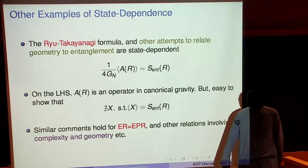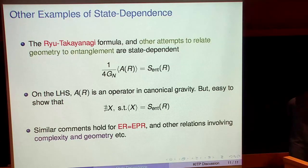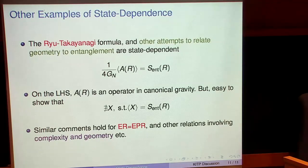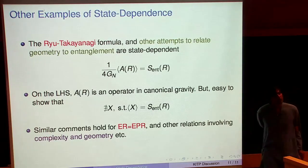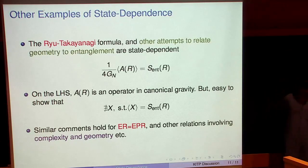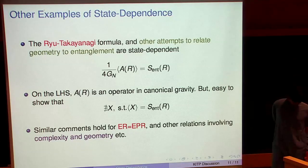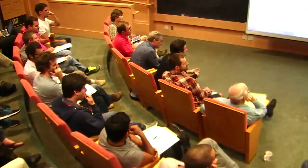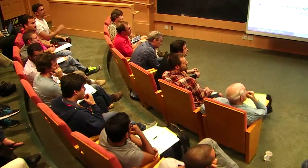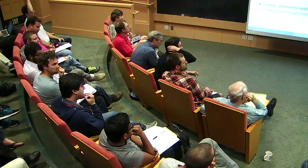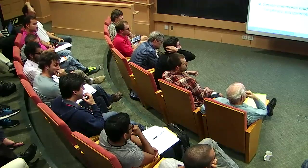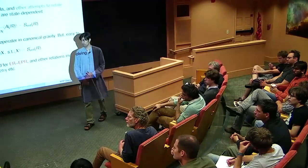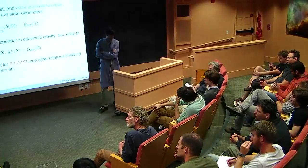Question: How important is the CFT structure to construct the mirror operators? For example, in matrix quantum mechanics dual to D0-branes, is it also state-dependent if you heat up D0-branes and look inside? Response: It probably would be. Having a dual field theory structure is not critical — what you need is some structure of locality in the bulk and the ability to set up the AMPS paradoxes. State dependence really comes from being able to set up the AMPS paradoxes, which would apply to the D0-brane matrix model setup as well.